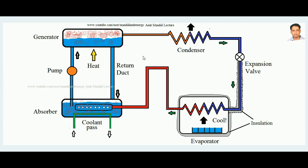This type of refrigeration system is used in industries where waste heat is available, because the compressor is replaced by heat alone to develop the refrigeration effect. For a solar refrigeration system, the absorber is kept in a cool area while the generator is kept in a sunny area. Direct sunlight or a concentrating arrangement focuses more sunlight onto the generator, liberating ammonia from the water.